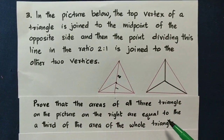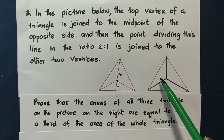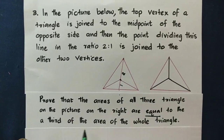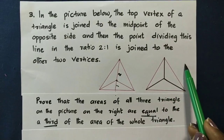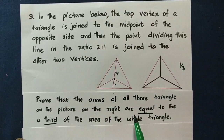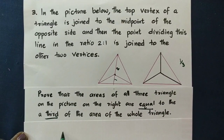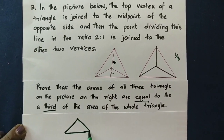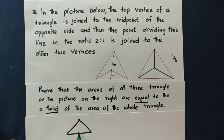We know the three triangles are equal, and that will be equal to one third of the whole triangle. The area of each is one third. That is why we can find it. Now we will take a look at our figure — there is a triangle.